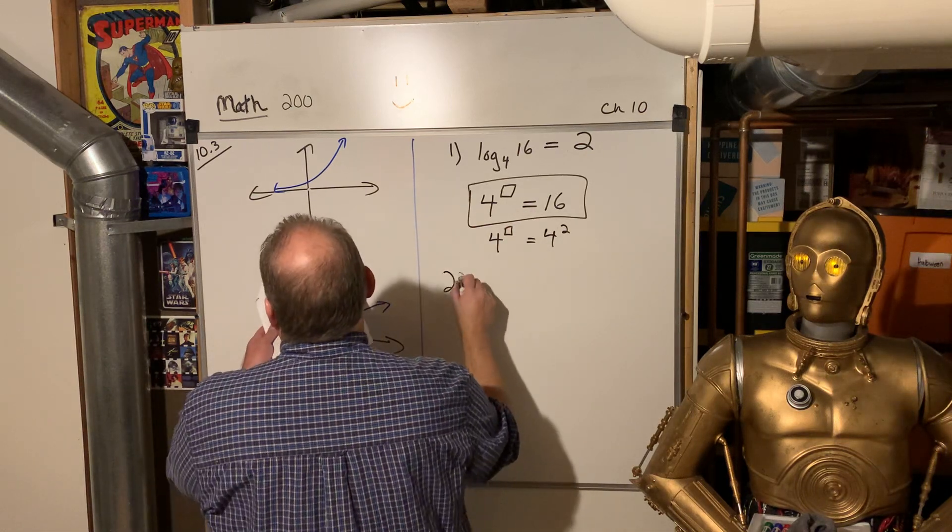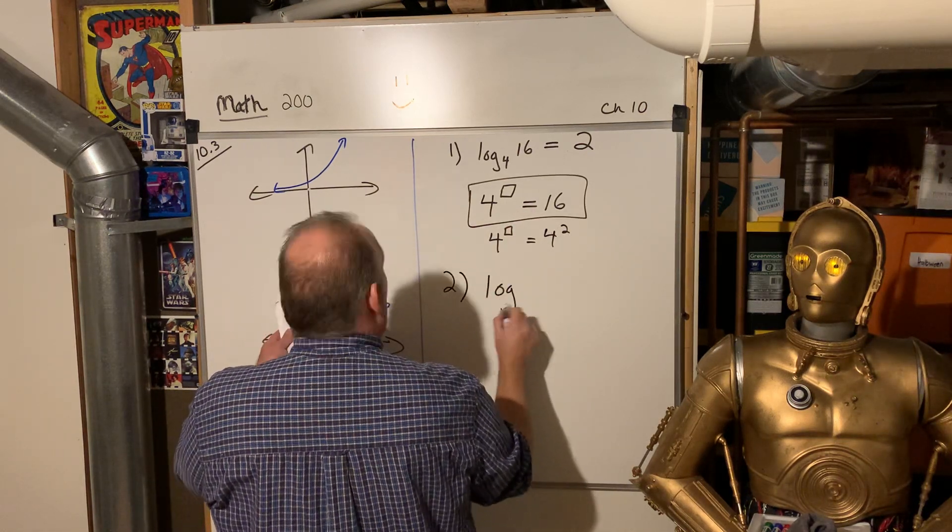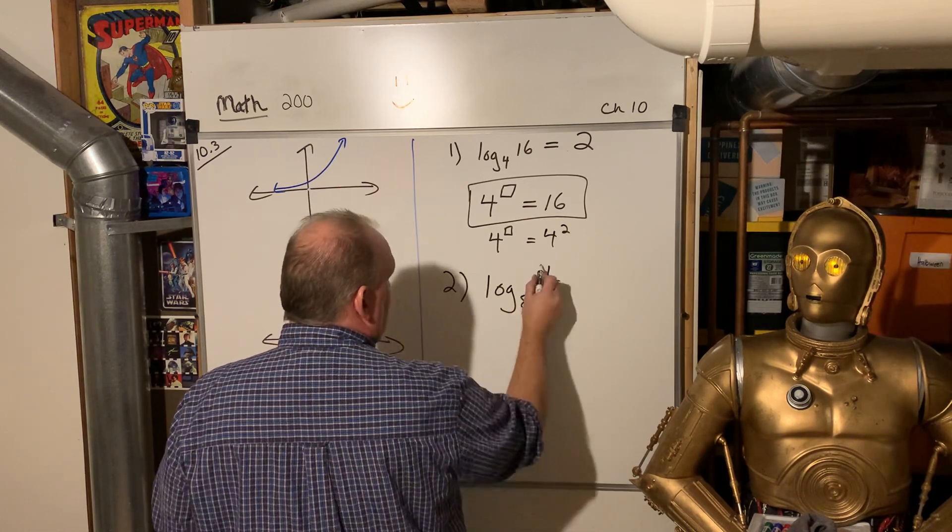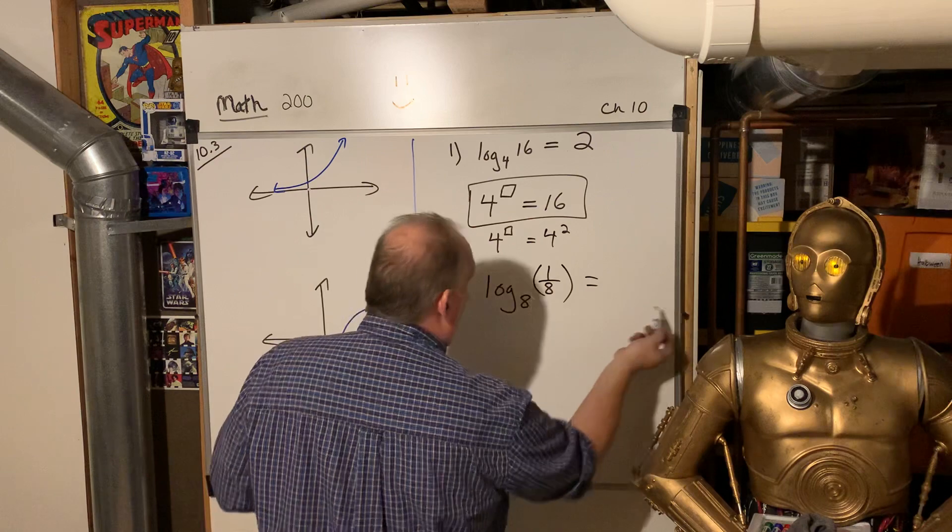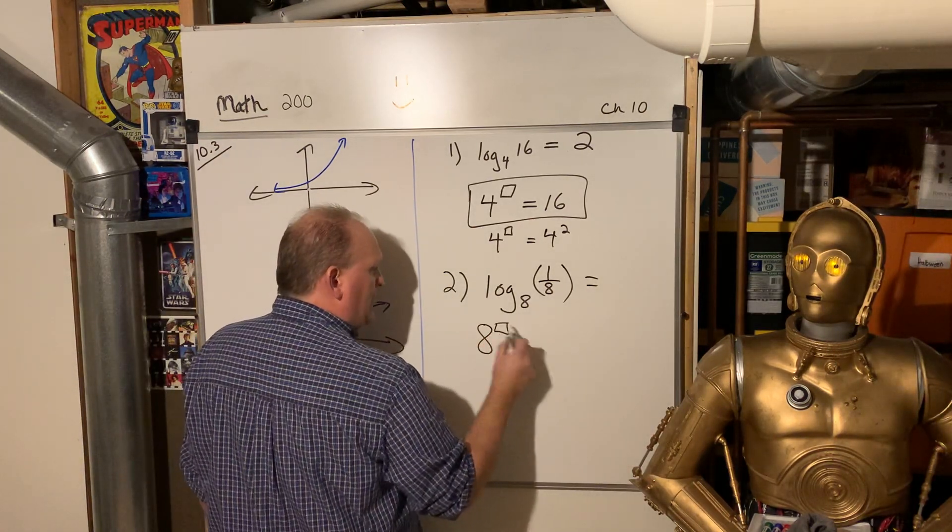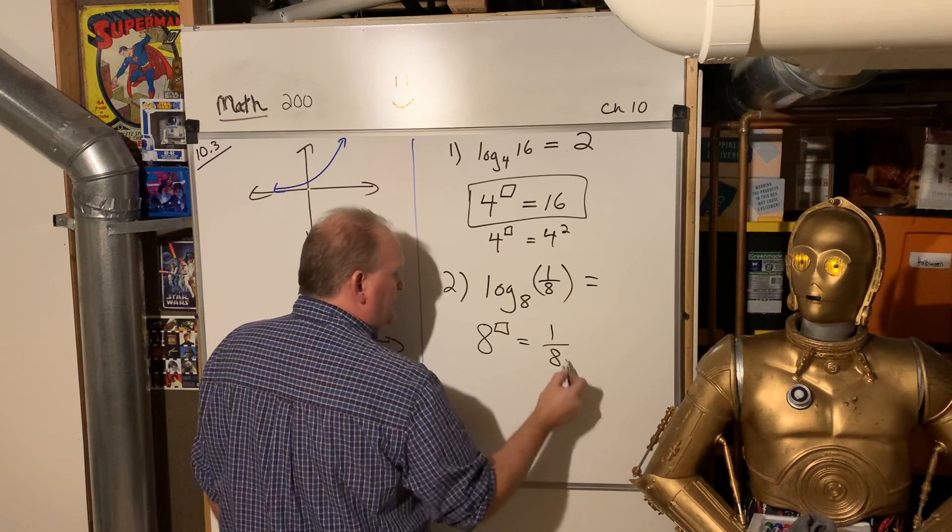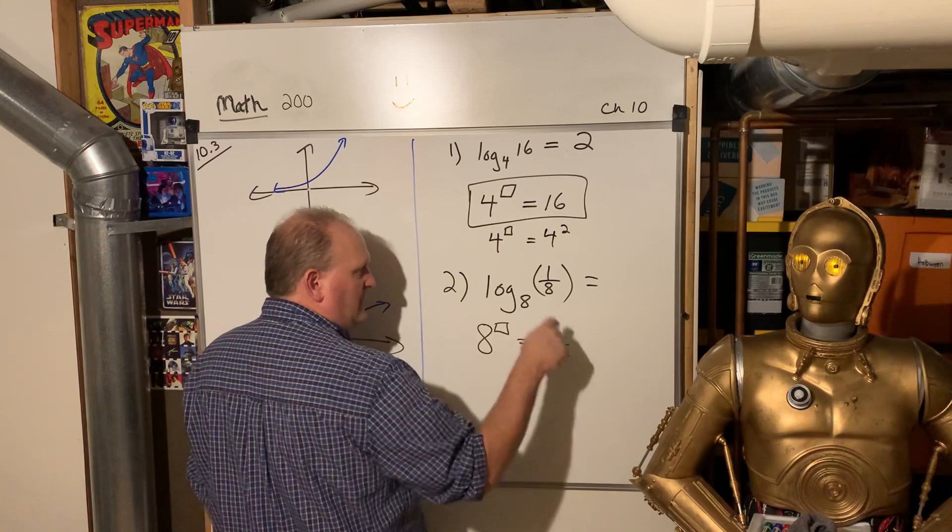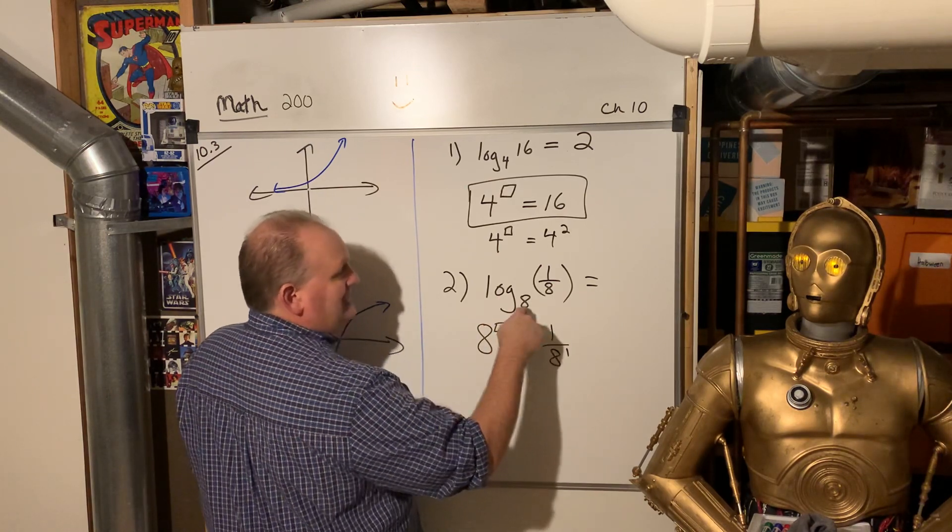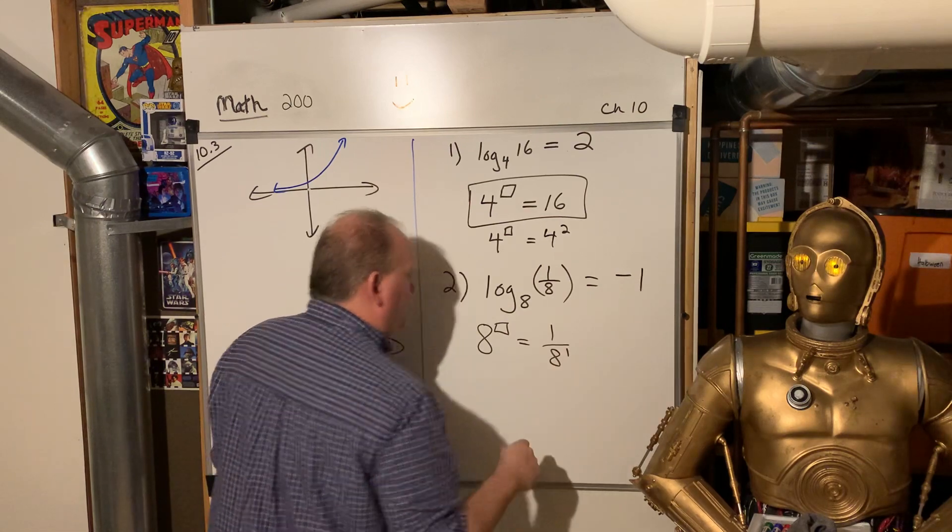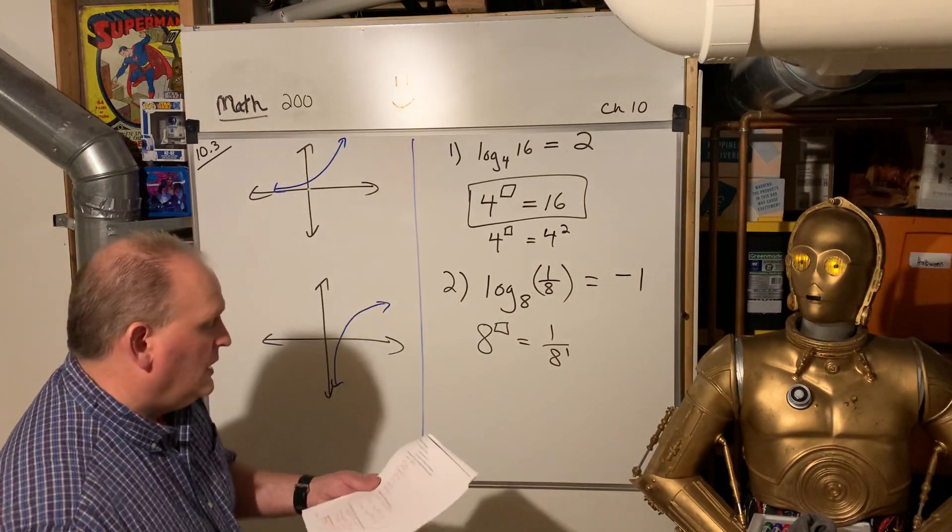So you're thinking, what do I take this base by to what power gives me this number? And the answer is two. All right. So let's look at another one. Log of eight, log base eight of one eighth is what? Well, think about that. Eight to what power gives you one over eight? Remember that's one over eight to the first. So if I just had a negative one there, that would move it down to the bottom, right? So eight to the negative one power gives me one eighth. That's negative one. All right.